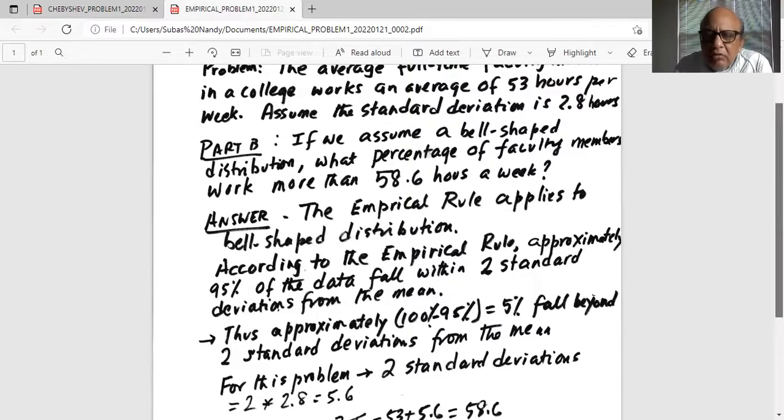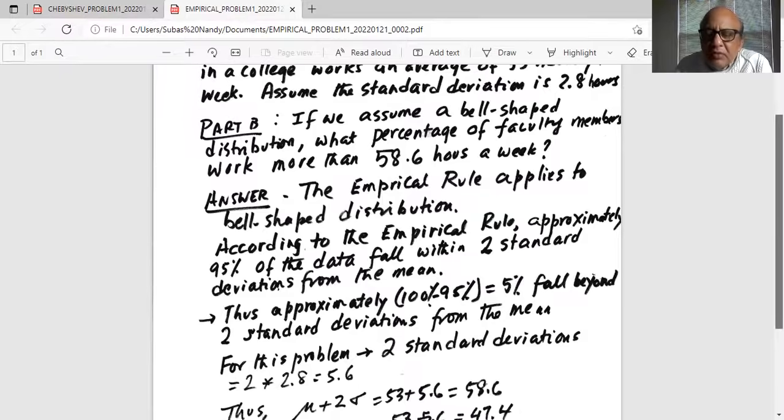According to empirical rule, approximately 95% of the data fall within two standard deviations from the mean. That is, you go two standard deviations on the right of the mean and two standard deviations on the left of the mean. And the entire area is approximately 95% within two standard deviations.